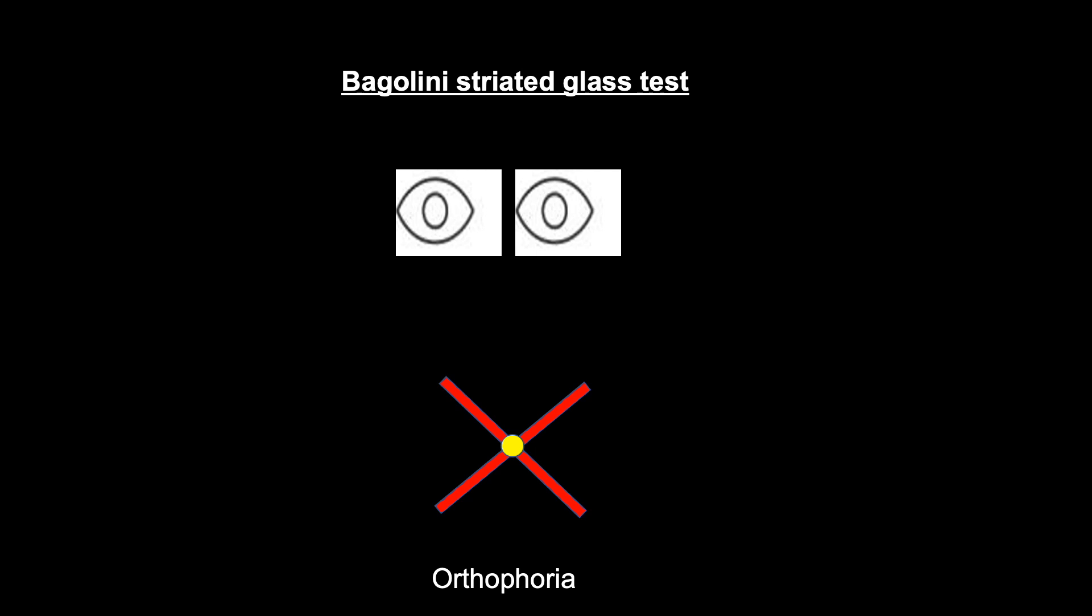The next one is the Bagolini striated lens test. In Bagolini striated glasses, we can see two lines intersect at their center in the form of cross lines in the orthotropic eye.